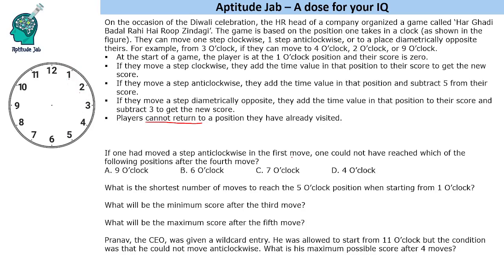Question one: if one had moved a step anti-clockwise in the first move, which of the following positions could one not have reached after the fourth move? Starting from one o'clock, the first step anti-clockwise takes you to twelve. The options are nine o'clock, six o'clock, seven o'clock, or four o'clock. You now have three more steps remaining.